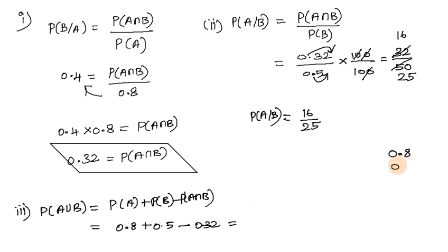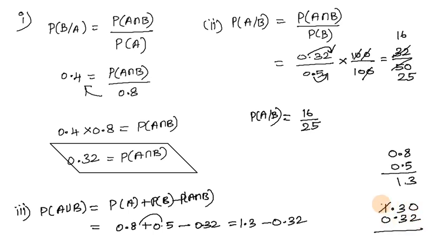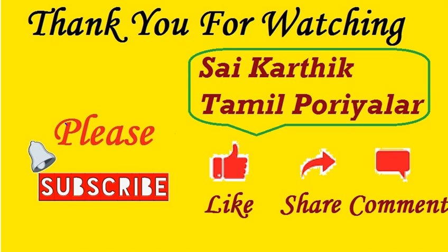Adding 0.8 and 0.5 gives 1.3. Then 1.3 minus 0.32: subtracting the hundredths digit, 0 minus 2 requires borrowing, giving 8; then 12 minus 3 gives 9 in tenths — wait, working through the subtraction gives 0.98. So the answer is P(A∪B) = 0.98. This completes the third subdivision.